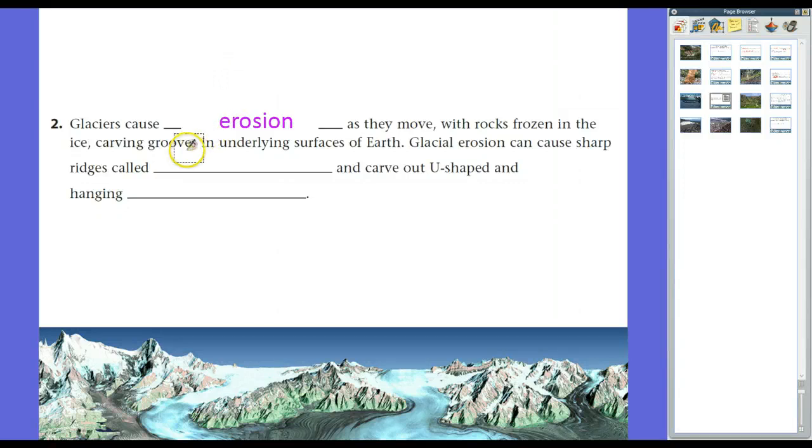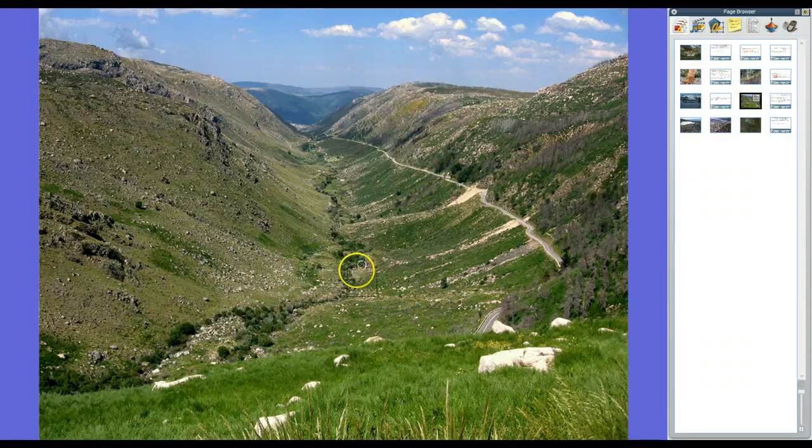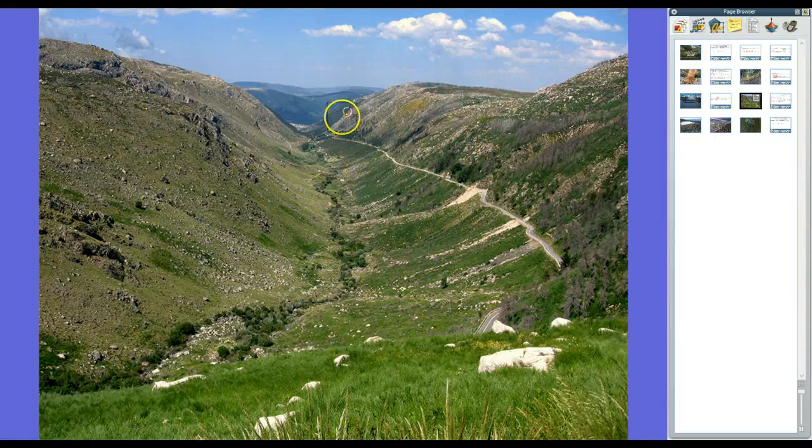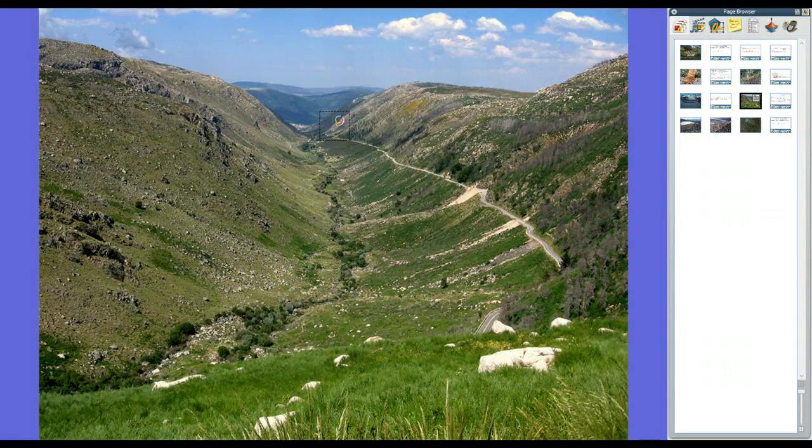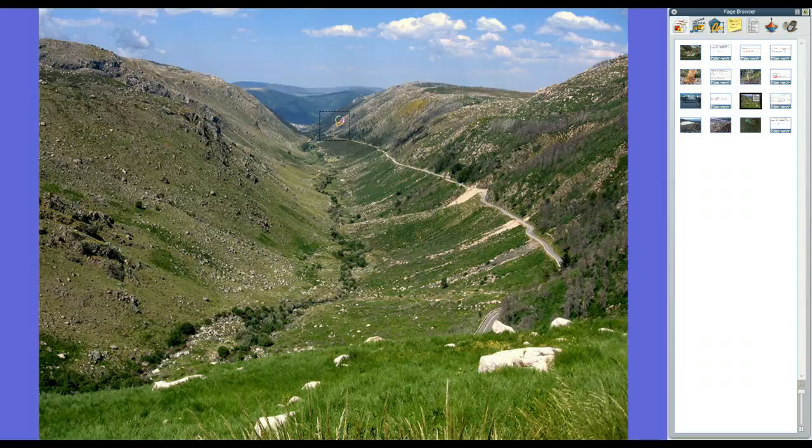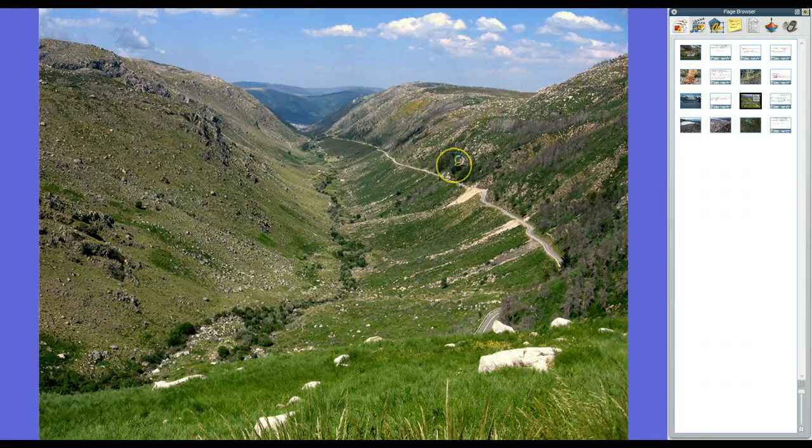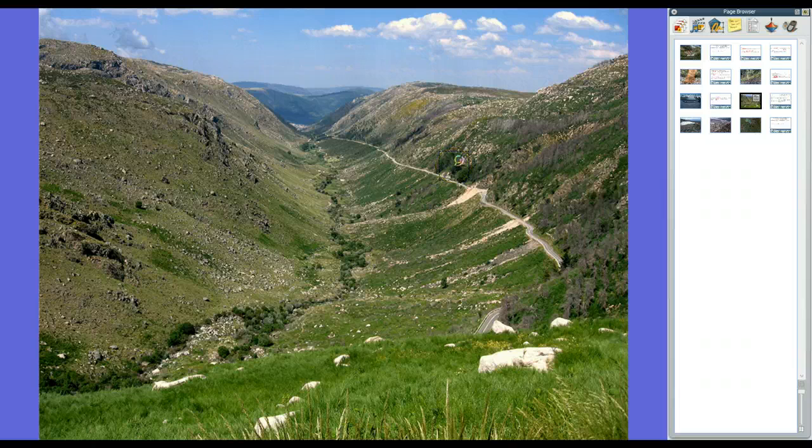Glacial erosion can cause sharp ridges, called arêtes, and they'll also carve out U-shaped and hanging valleys. Here's a good example of the U-shaped valley. This was the floor of the glacier. And the glacier itself cut out these walls. And as you can see, instead of having a valley, like with a river where it's kind of steep or even in a canyon, it's nice and smooth and rounded because the glacier was pulling and it was dragging all of it. It's pulling out like a bulldozer, essentially. If you've seen on a construction site, a bulldozer pushing dirt, a glacier essentially does the same thing.